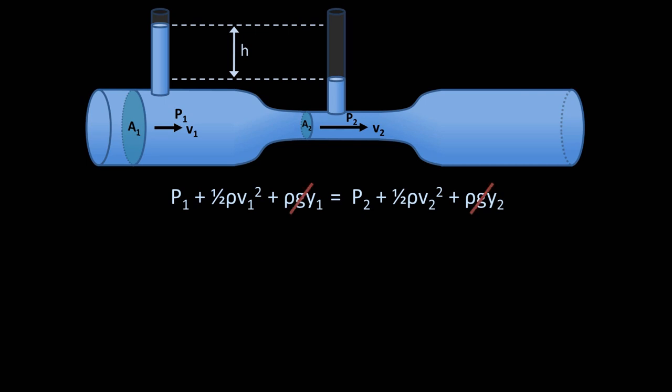The first simplifying step is to realize that the vertical height of the two sections is the same, so these terms cancel out. With a little rearrangement of the remaining terms, we are left with p1 minus p2 equals 1 half the density times velocity 2 squared minus half density times velocity 1 squared. Factoring out the 1 half and density gives us this, which is looking more manageable.